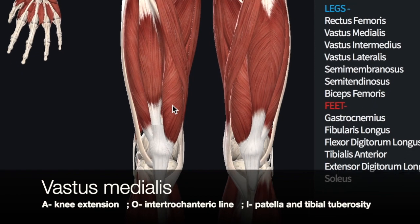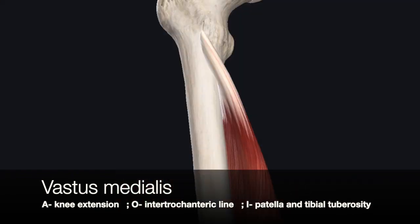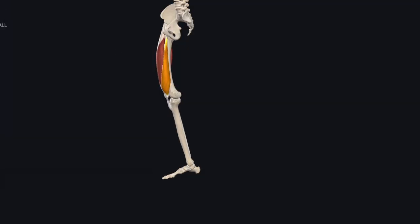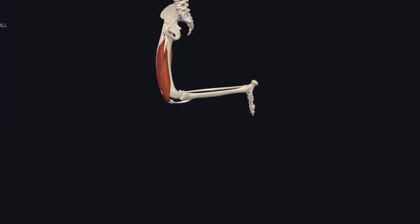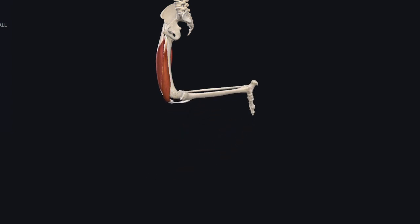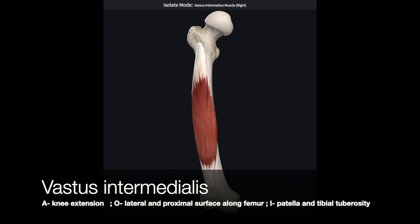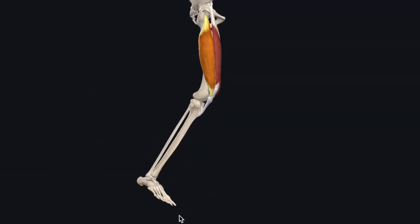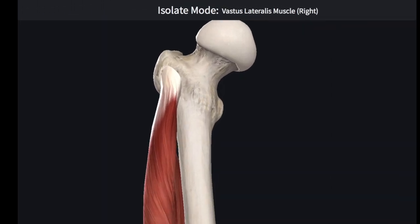The vastus medialis originates on the intertrochanteric line, the ridge between the greater and lesser trochanter of the femur, and is involved in stabilization of the knee during extension. The vastus intermedius originates along the lateral and anterior surface of the femur. The vastus lateralis originates on the greater trochanter of the femur.